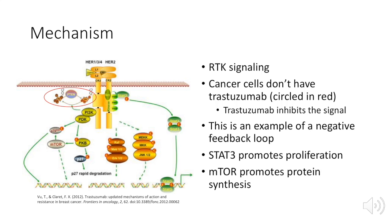While STAT3 is going through its transduction, mTOR is also going through its own pathway and creates the protein trastuzumab, which is circled there in red. This will inhibit the receptors to stop the phosphorylation of these proteins and tell the cell to stop its signal. In a regular cell, this is an example of a negative feedback loop because once it becomes activated, A goes to B, B to C, C to D, etc., until that final endpoint turns itself off at point A.